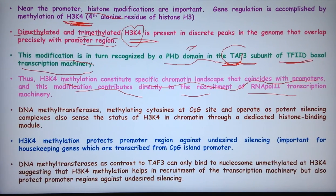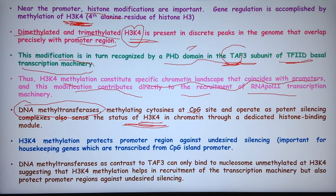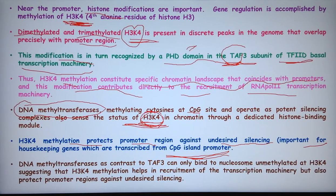DNA methyltransferases methylate cytosine at CpG sites and operate as potent silencing complexes. They also sense the status of H3K4 — when H3K4 is methylated, DNA methyltransferases are able to sense this status and do not act on sequences with methylated H3K4. Therefore, H3K4 methylation protects the promoter region against undesired silencing, which is very important for housekeeping genes transcribed from CpG island promoters. Because of H3K4 methylation, the region becomes inaccessible to DNA methyltransferases, rendering the promoter active. DNA methyltransferases, in contrast to TAF3, can only bind to nucleosomes with unmethylated H3K4.